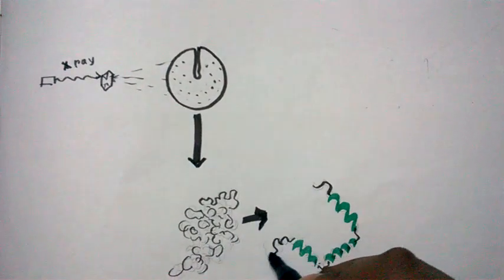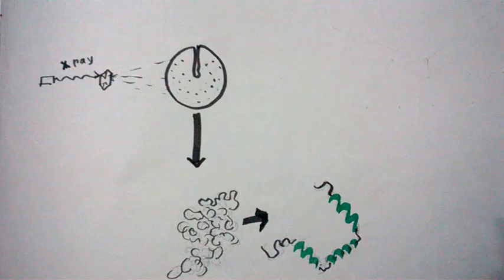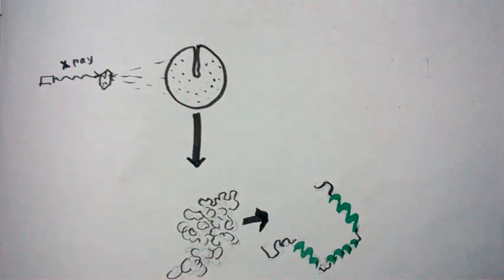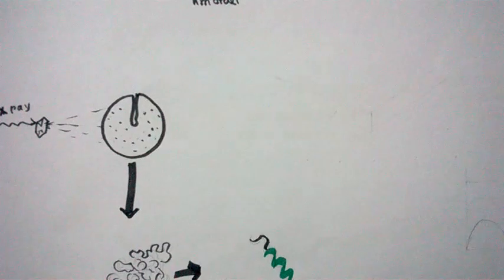Once we have our electron density map, we try to fit our atoms and molecules inside it — looking for a perfect match, just like a jigsaw puzzle. Following some algorithms and statistics, we ultimately build a 3D model of the protein. In this way, we can derive structural information from the X-ray crystallography experiment.